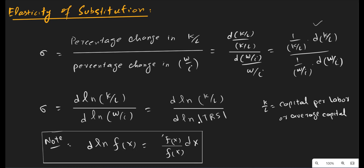We cannot take the log of negative values, which is why we take the technical rate of substitution in absolute form. So this is all about the elasticity of substitution and how to calculate it. In the upcoming videos, we will numerically calculate the elasticity of substitution for the Cobb-Douglas production function and the CES production function. Thank you for watching — if you have any questions, you can comment in the comment section below.